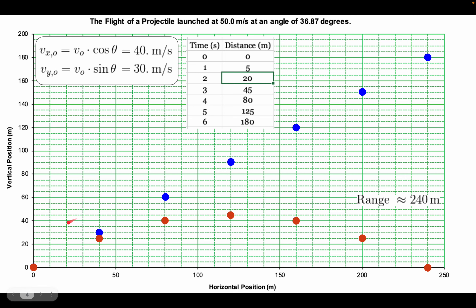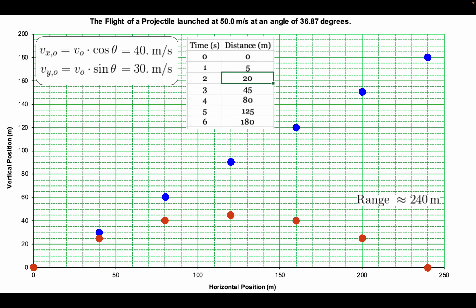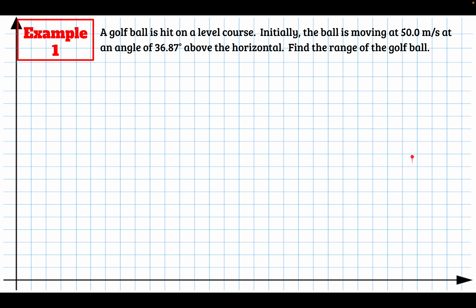The key point is that in the horizontal direction, even though gravity pulls it down, the ball still travels 40 meters every second horizontally. Now let's solve this exactly. Example one: a golf ball hit on a level course, initially moving at 50 m/s at 36.87° above the horizontal. We want to find the range. We start with a diagram showing the coordinate system and the parabolic path — it starts at ground level, goes up, and lands back on the ground.